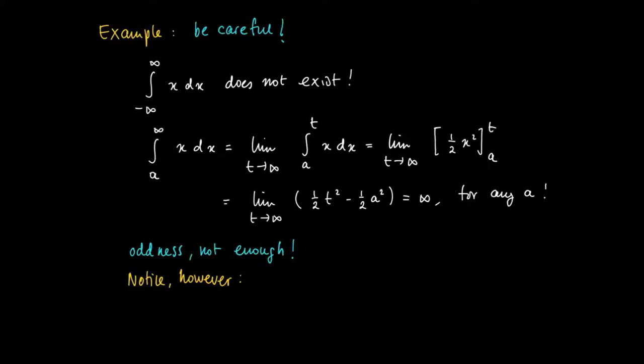And this would indicate that if we would calculate the definite integral from minus t to t of x dx, we get 0 for all t's. And so you might be tempted to define the integral minus infinity to infinity of the function x dx as 0.